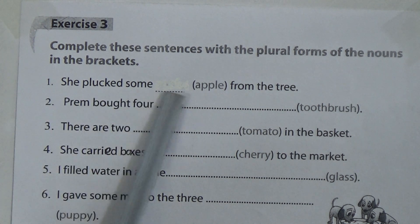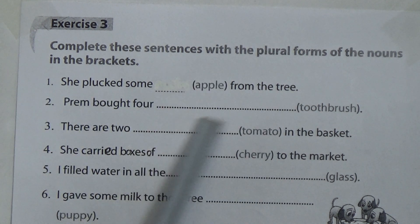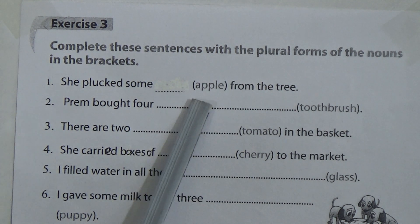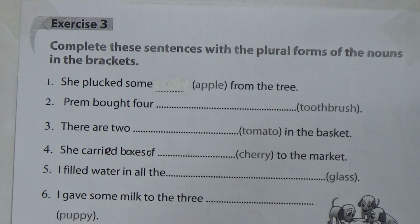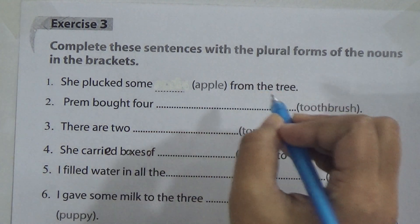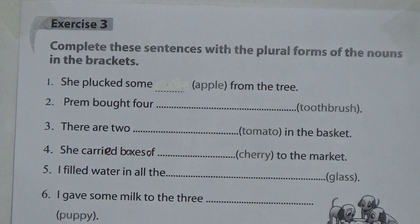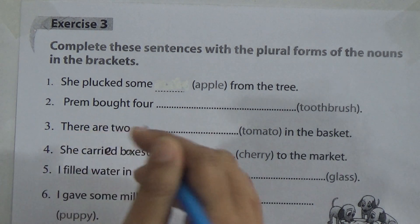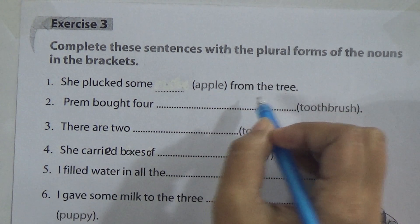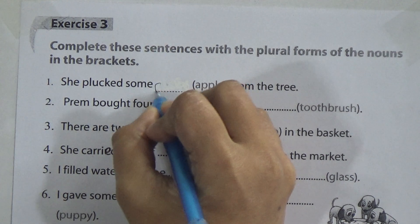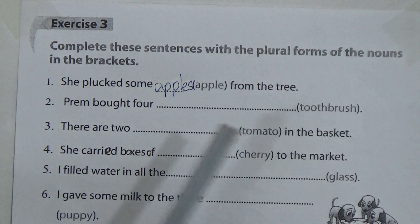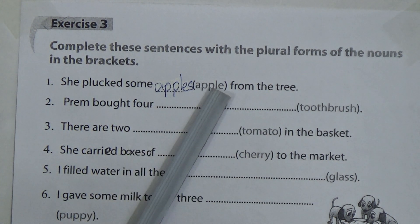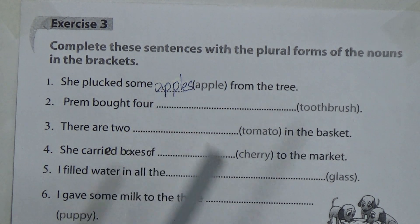Number one: she plucked some _apple_ from the tree. The word apple is in the bracket and it is singular. We will make it plural. The answer is apples — A-P-P-L-E-S. We add only S because there is already an E at the end of the noun, so we add only S to make it plural.